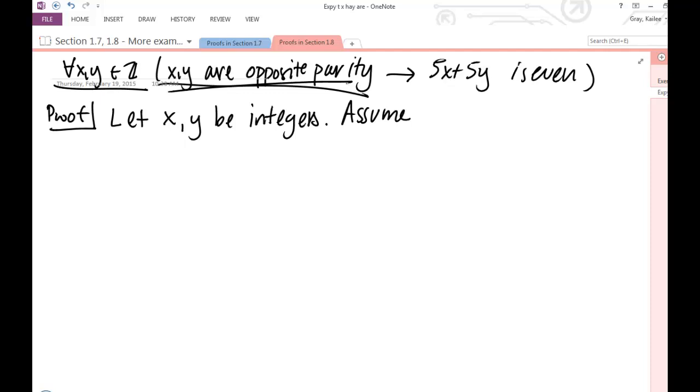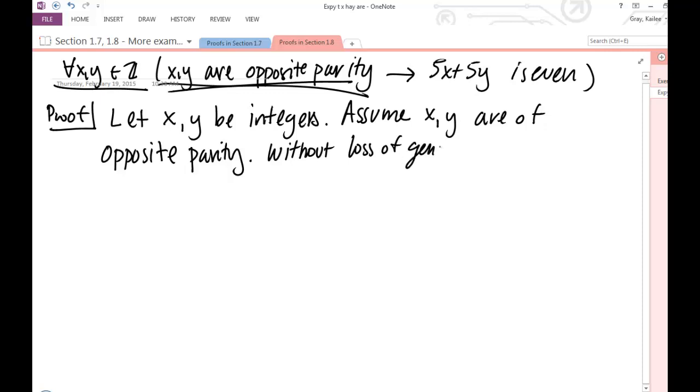you've got to justify why you're saying without loss of generality. If you just go into without loss of generality, assume x and y are whatever, then you're not really setting it up. So you need to set up that without loss of generality and make it clear to your reader why you're applying that. So we're going to say assume x, y, are of opposite parity. Now we can play into that without loss of generality. And again, be really careful about it. If you're hesitant, just don't use it.